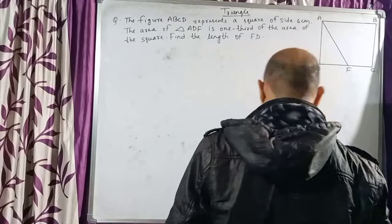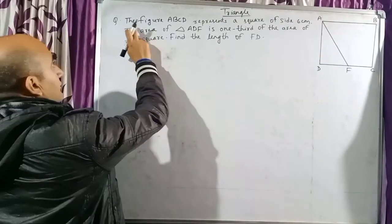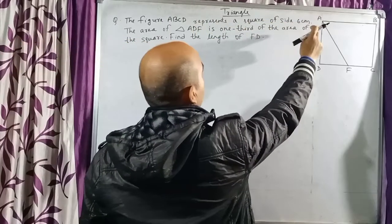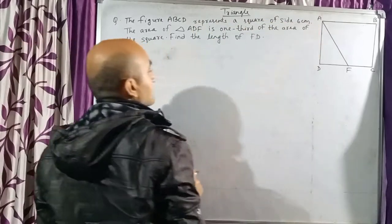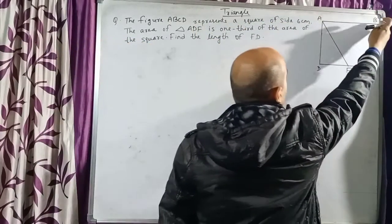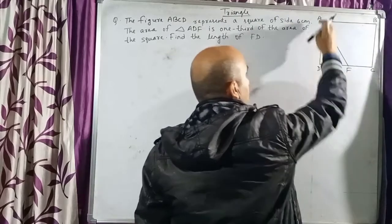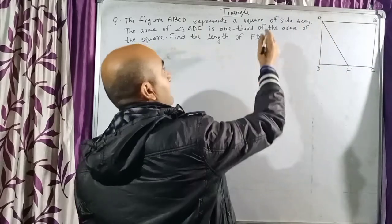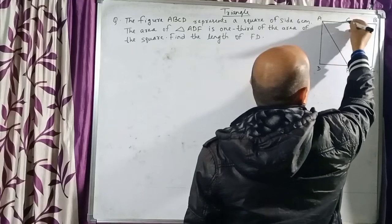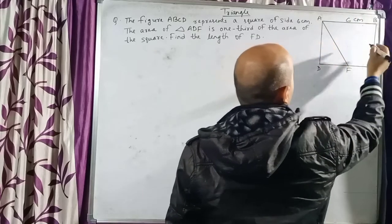The question says: the figure ABCD represents a square of side 6 centimeters. So ABCD is a square having side 6 centimeters, which means all sides are 6 centimeters in length, because a square has all four sides equal.